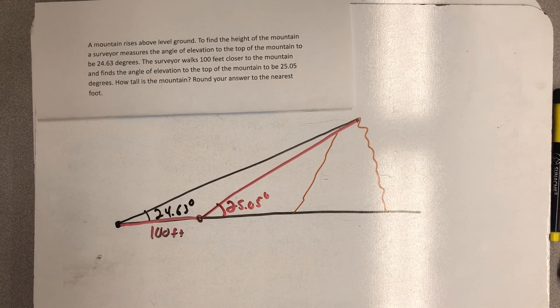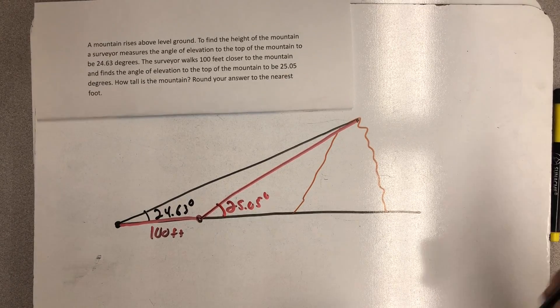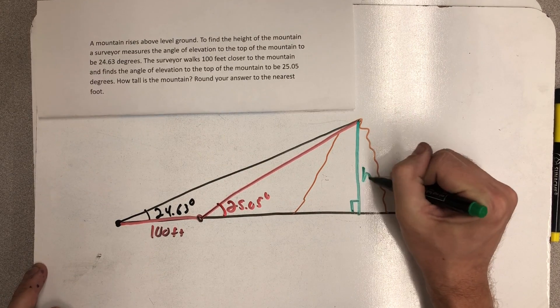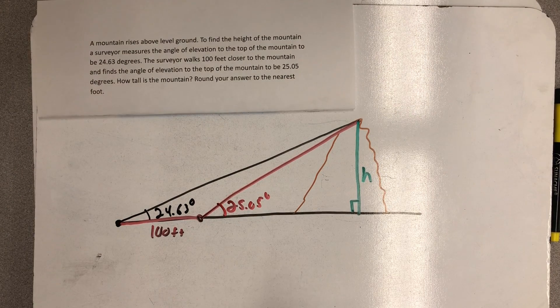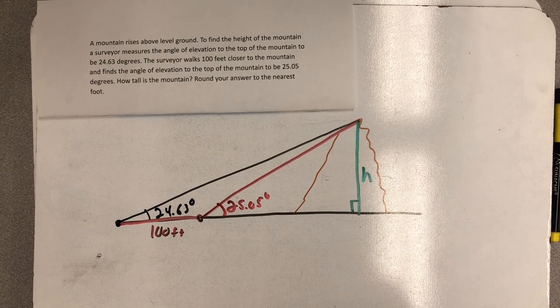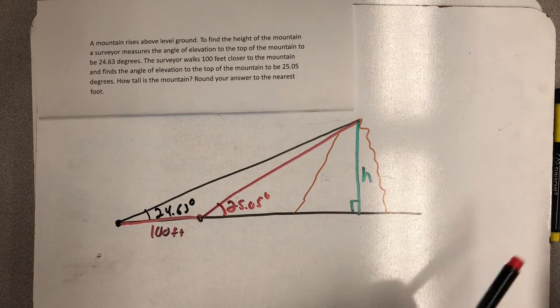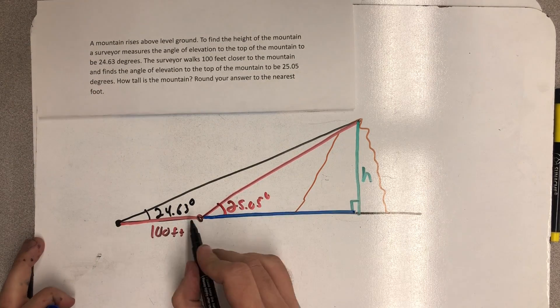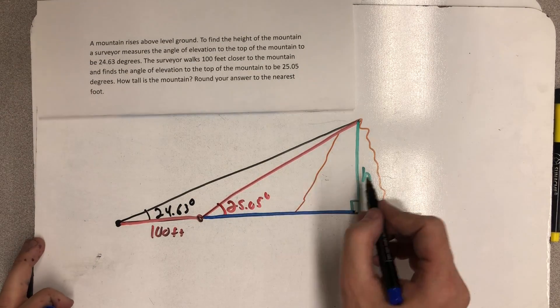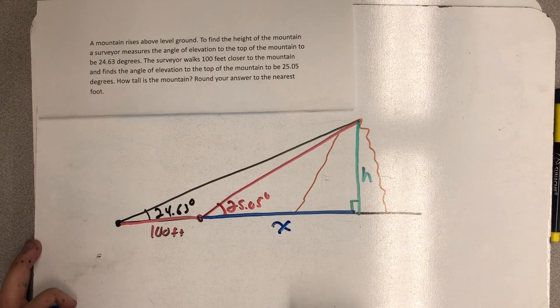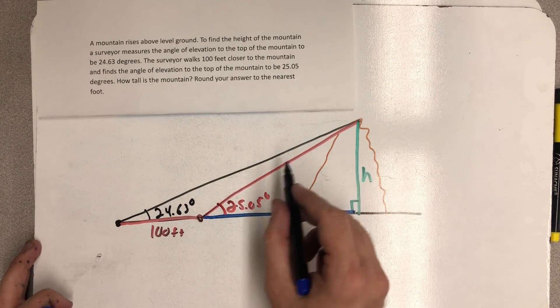How tall is the mountain, round your answer to the nearest foot? So we're really looking for this height and I see the role the level ground's doing here, right? Let's me draw that right angle there. And what I see are two different right triangles. A small right triangle here with a blue, green, and red side. And I can label that blue side x. And then I see a great big right triangle.